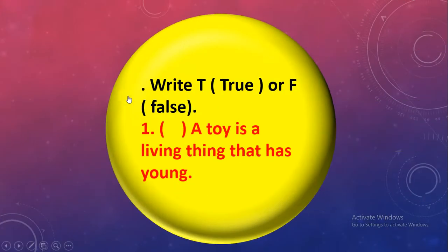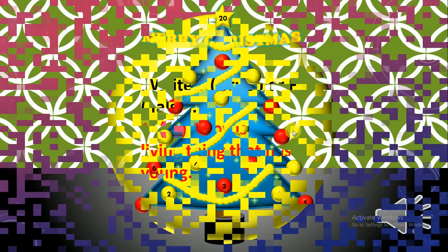True or false. A toy is a living thing that has young. Toy living thing can't have young babies. No, false. Of course, false. Super, super guys.